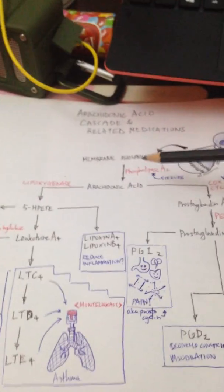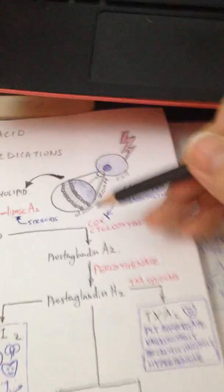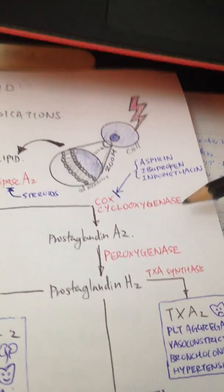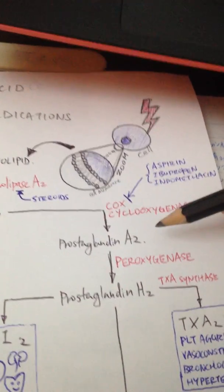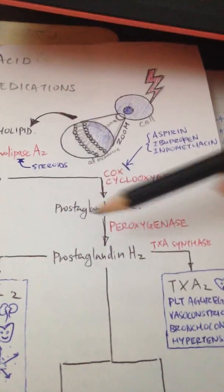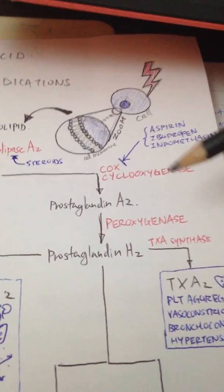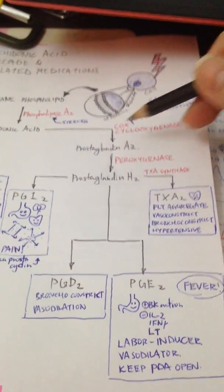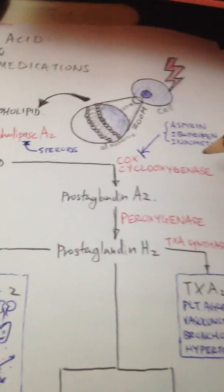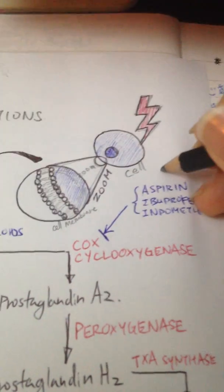From the arachidonic acid, it can go to two types of pathways. One is the prostaglandin pathway, which is catalyzed by cyclooxygenase or COX in short. I'll be covering the COX first because it probably sounds more familiar to people doing pharmacology.